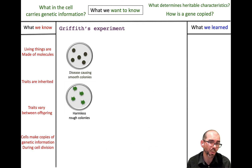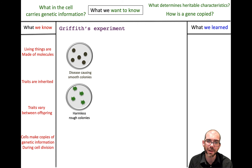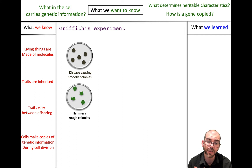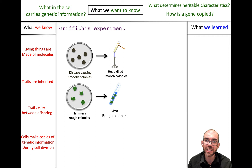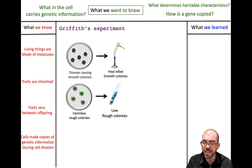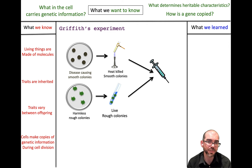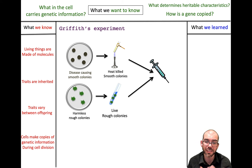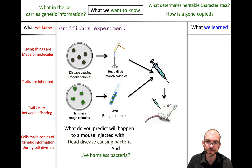Griffith then wanted to know what it was about the smooth disease-causing bacteria making the mice sick. He took his two separate colonies — the disease-causing smooth ones and the harmless rough ones — killed the smooth ones with heat while keeping the rough colonies alive, and then combined the two into one syringe. He now had dead disease-causing bacteria and living harmless bacteria. What would happen when injected into a mouse?